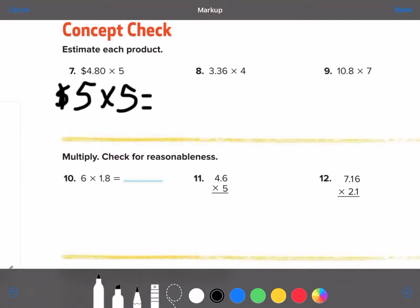Number eight. Look at 3.36. Is that closer to 3 or is that closer to 4? Okay, finish the problem. Number nine. We have 10.8 times 7. Now, is 10.8 closer to 10 or is it closer to 11? Okay, finish the problem.